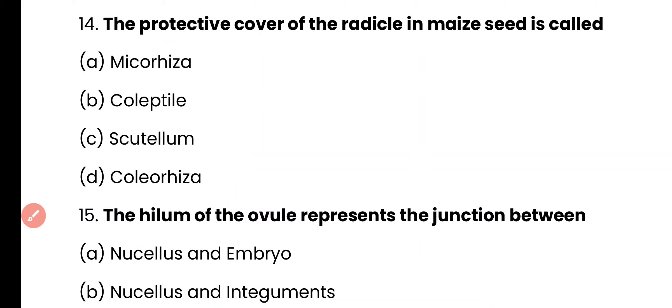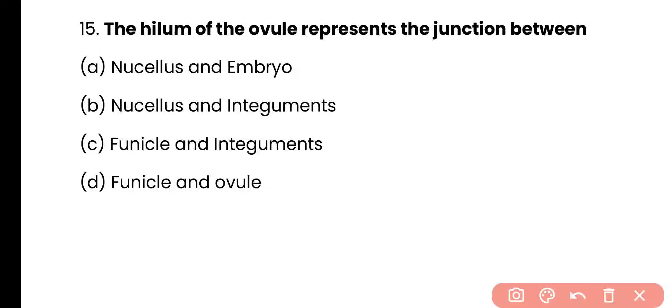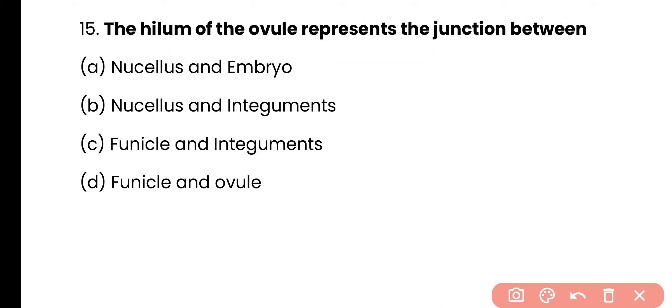Question number 15. The hilum of the ovule represents the junction between: nucellus and embryo, nucellus and integument, funicle and integument, or funicle and ovule? The correct answer is option D. Hilum is the junction between the funicle and the ovule.